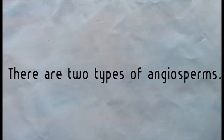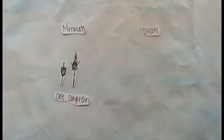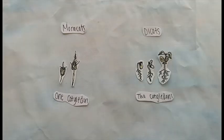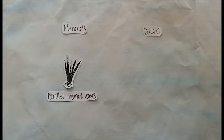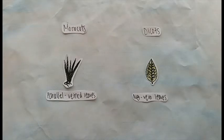There are two types of angiosperms: monocots and dicots. Monocots are called monocots because they have one cotyledon — a seed leaf. Likewise, dicots are called dicots because they have two cotyledons. Monocots have parallel-veined leaves, while dicots have net-veined leaves.